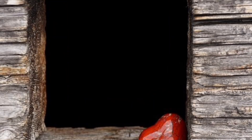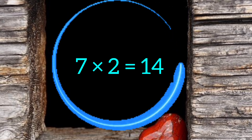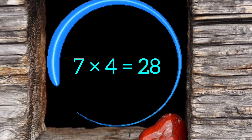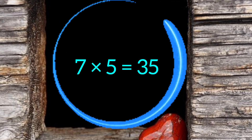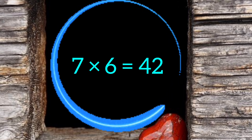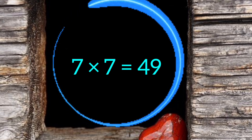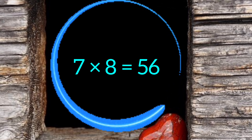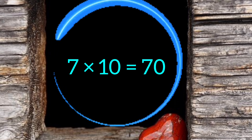Let's learn one more time. 7 1's are 7. 7 2's are 14. 7 3's are 21. 7 4's are 28. 7 5's are 35. 7 6's are 42. 7 7's are 49. 7 8's are 56. 7 9's are 63. 7 10's are 70.